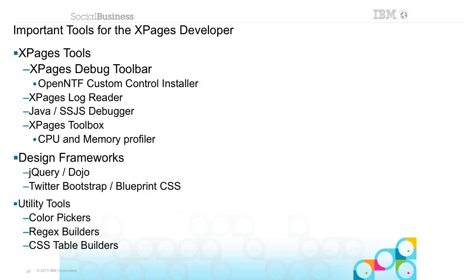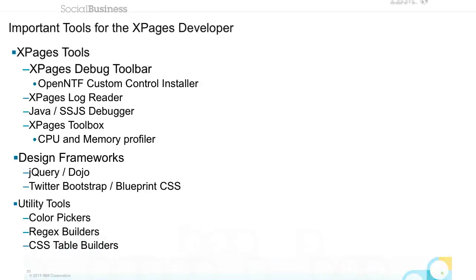There are other tools out there like color pickers — not just to pick a single color, but sites where you pick one color and it gives you complementary colors, a whole palette to work with. There are regular expression builders. I almost fell off my chair when I found a CSS table builder, because I have a lot of trouble trying to style tables nicely. That really helped me get going in that area.